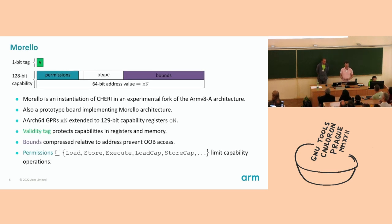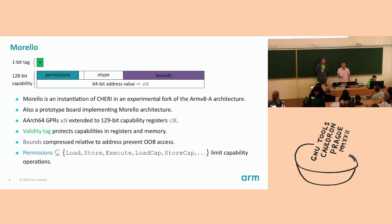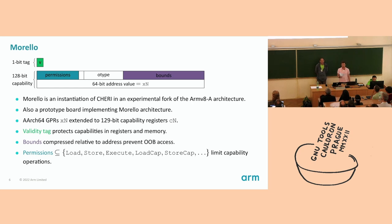Morello is an instantiation of CHERI in an experimental fork of the ARMv8A architecture. It's also the name of a prototype board which implements the Morello architecture that ARM has developed. Concretely, the 64-bit general purpose registers in AArch64 are extended to 129-bit capability registers in Morello. The capability registers hold an address in the low 64 bits and metadata in the upper 64 bits, together with an extra 1-bit validity tag. When capabilities are stored in memory, the tag bits are stored on the side.